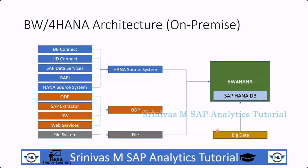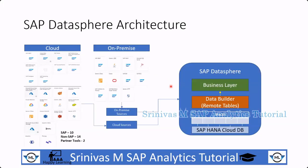This covers BW4HANA architecture from a connectivity point of view. Moving to Datasphere — what is Datasphere? SAP Datasphere is a successor to BW4HANA, but the major difference is that Datasphere is a completely cloud-based product. It is a SaaS product, meaning software as a service.